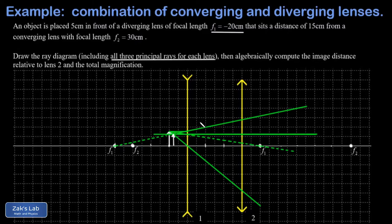Because this first image lands to the left of the second lens, we can treat this as a real object that will produce an image when it interacts with the second lens. If your first image lands on the wrong side of the second lens, that's the virtual object case — I'll post a link to an example where I treat that case. The one we're looking at is simpler: I have a real second object.